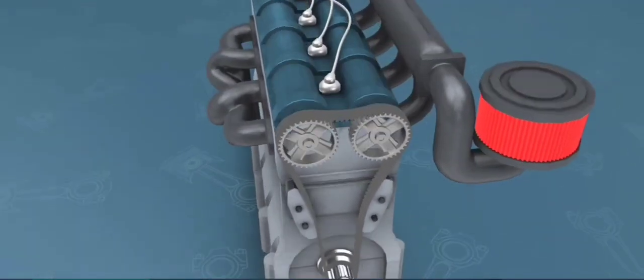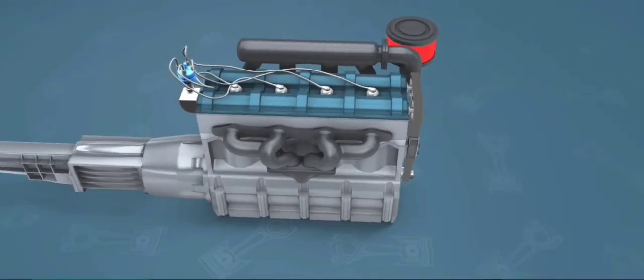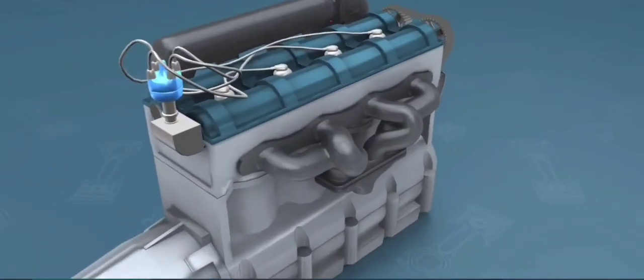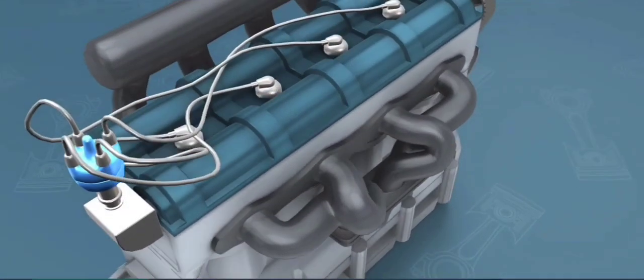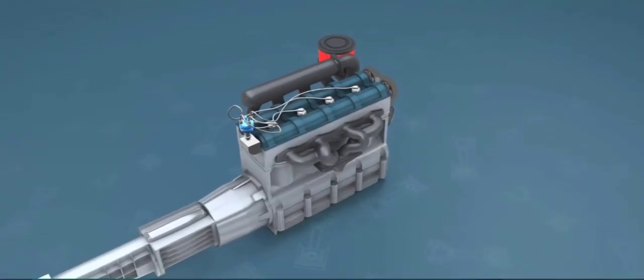In 1864, Otto and Eugen Langen founded the first internal combustion engine production company, N.A. Otto and Company. Otto and company succeeded in creating a successful atmospheric engine that same year.